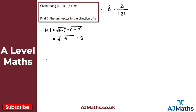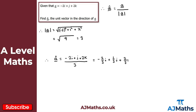So the unit vector in the direction of a is (-2i + j + 2k) divided by 3, which gives us -⅔i + ⅓j + ⅔k. You could also express this as a column vector. That brings us to the end of this video on 3D vectors.